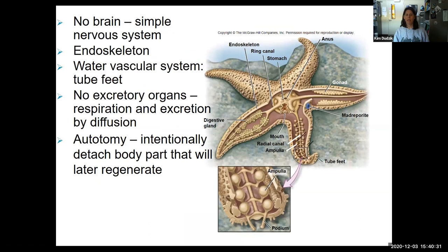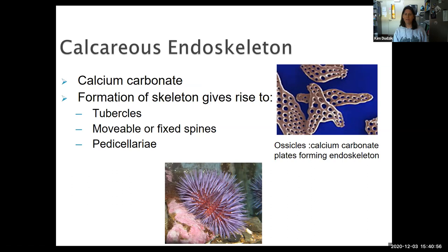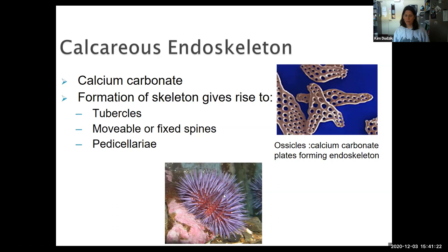Echinoderms don't have a brain, but they have a very simple nervous system. The nervous system extends through each of the arms of the echinoderm. They do have an endoskeleton — a calcareous endoskeleton made of calcium carbonate plates that fit underneath an integument, the skin on top. That formation of the skeleton can give rise to tubercles, like projections coming out, or more low-lying bumps. These are spines coming out of this sea urchin.